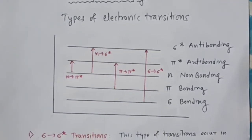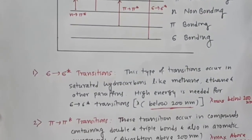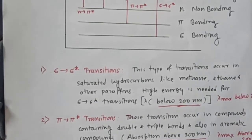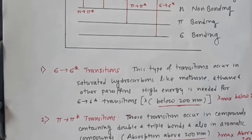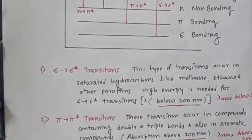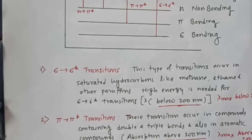Now the first transition is sigma to sigma star. This type of transition occurs in saturated hydrocarbons — molecules containing only sigma bonds — such as methane, ethane, and other paraffins. Therefore, high energy is needed. The lambda max will be small and is normally below 200 nanometers. Whenever there is a transition of the order of 180 or 190 nanometers, you can say that is a sigma to sigma star transition.